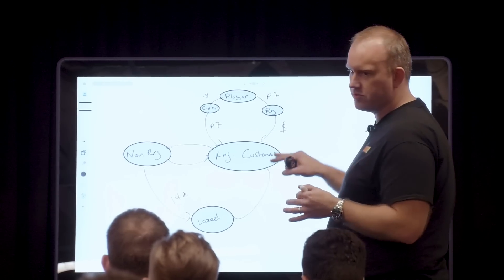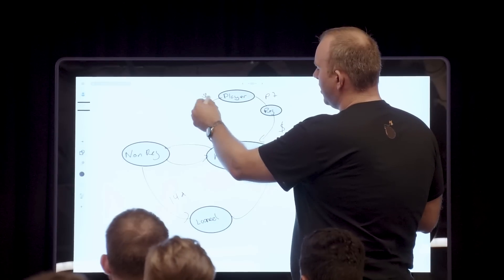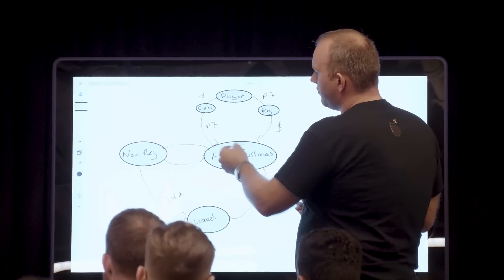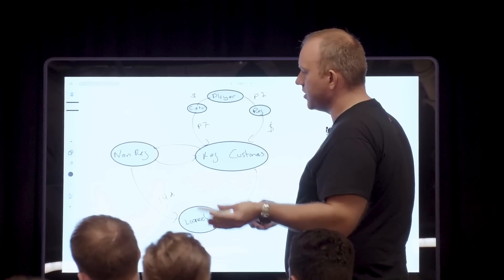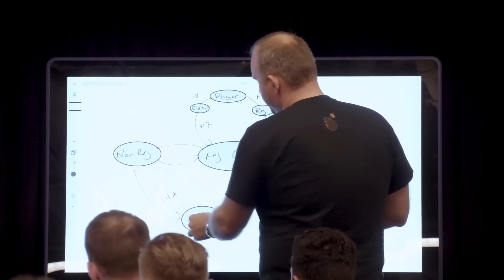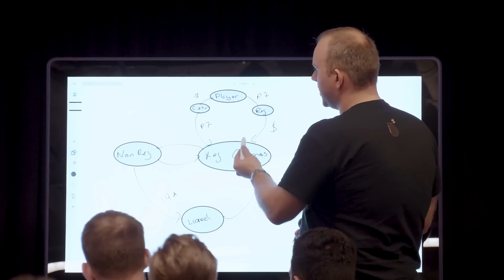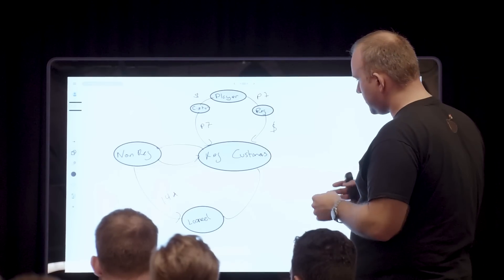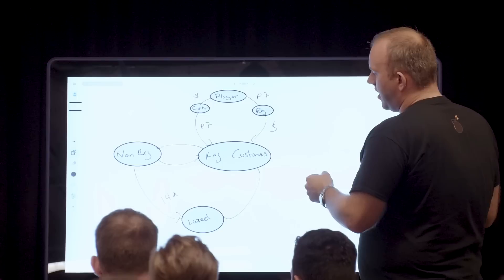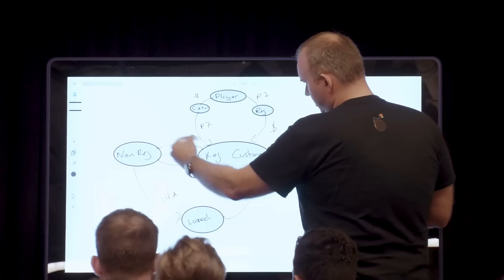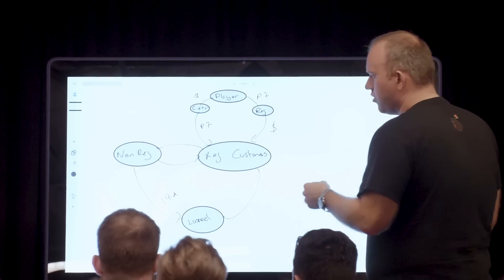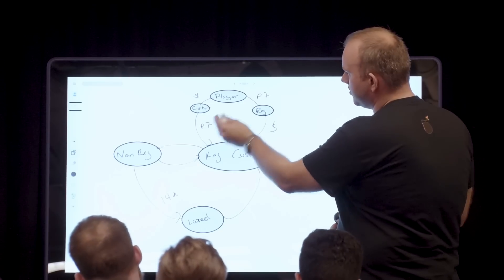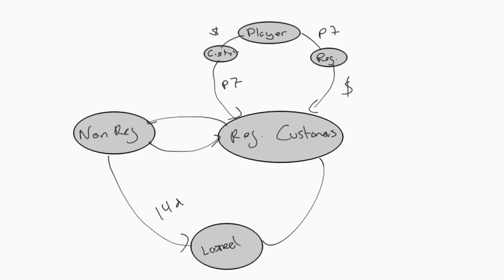Once you're a regular customer you're not always one — miss a day and you move to a 'weakened' pool, but play seven days again and you return. If you don't play for 14 days you enter the lapsed pool, but coming back can restore your regular status. Each group needs different things: new payers need to be driven to seven days per week; weakened users need game systems to bring them back; lapsed users need reactivation.